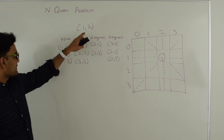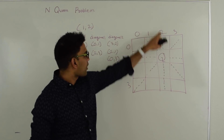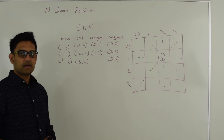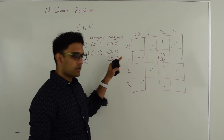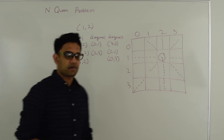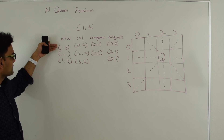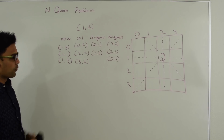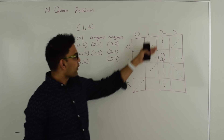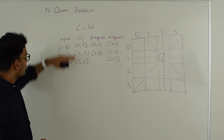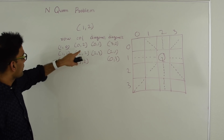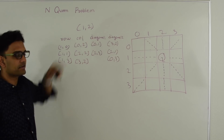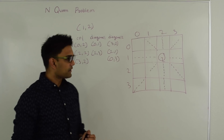Let's suppose the queen was placed at a square — all these squares will be under attack. All squares on the same row will be under attack, and they will have the same row value as the queen's row value. Similarly, all squares on the same column will be under attack because their column value is the same as the queen's column value.